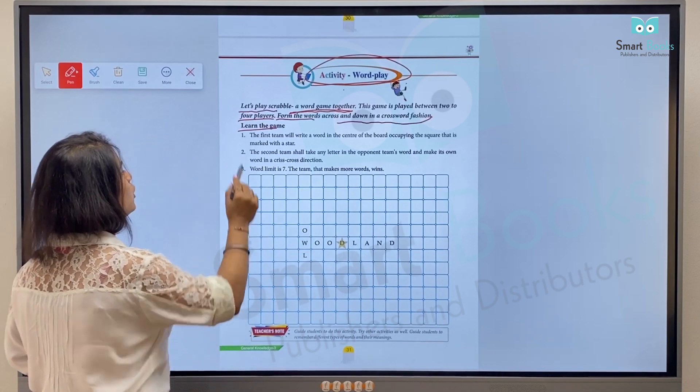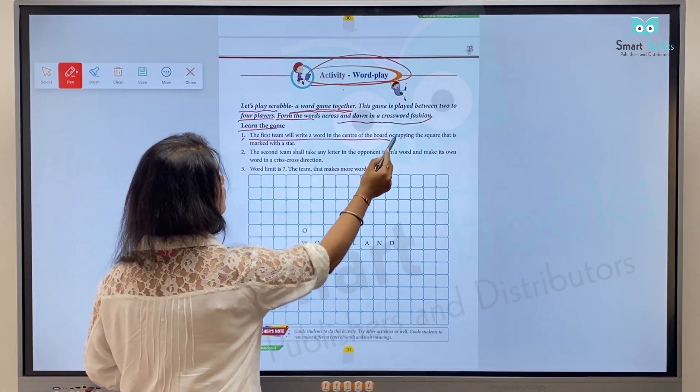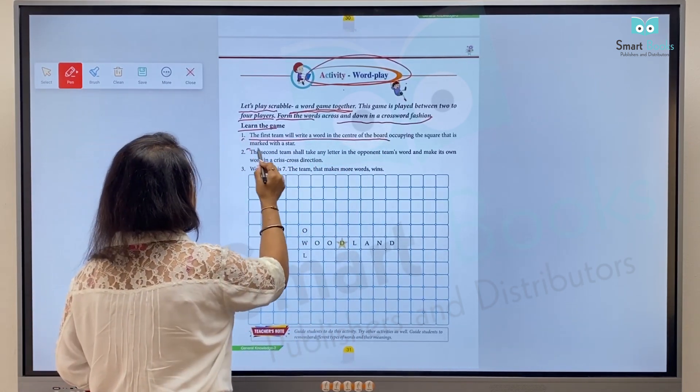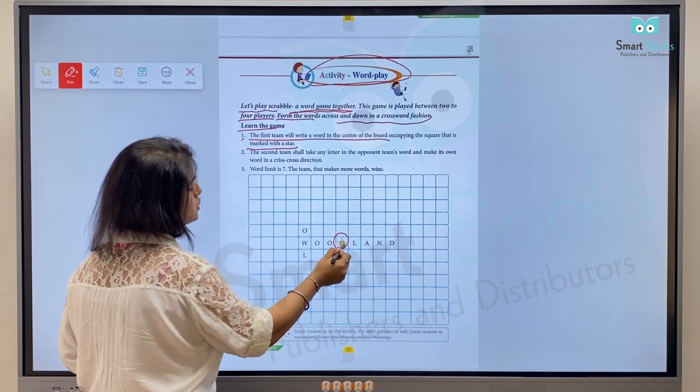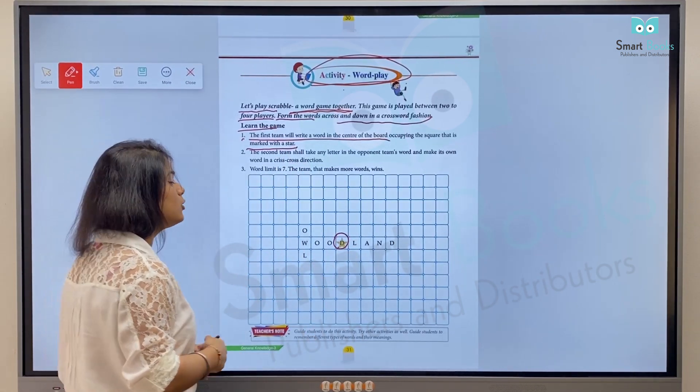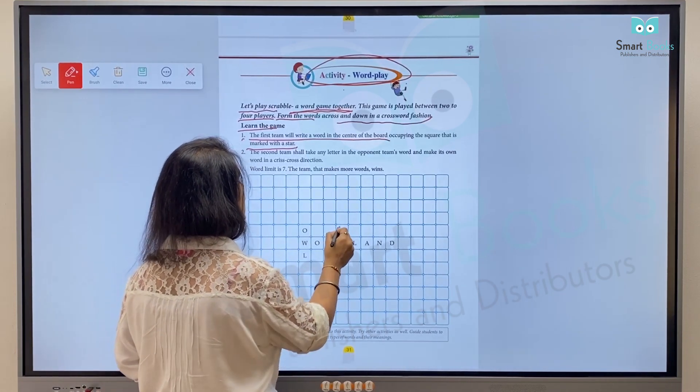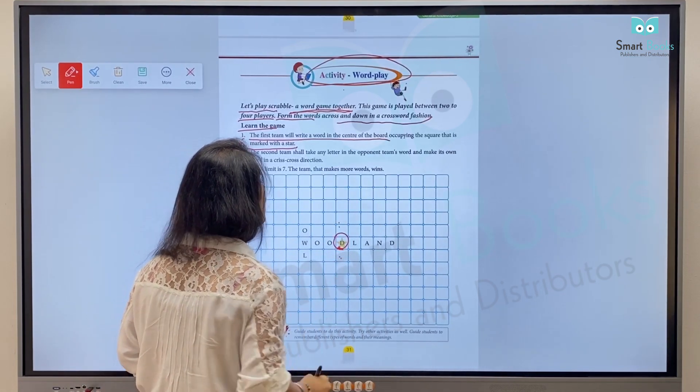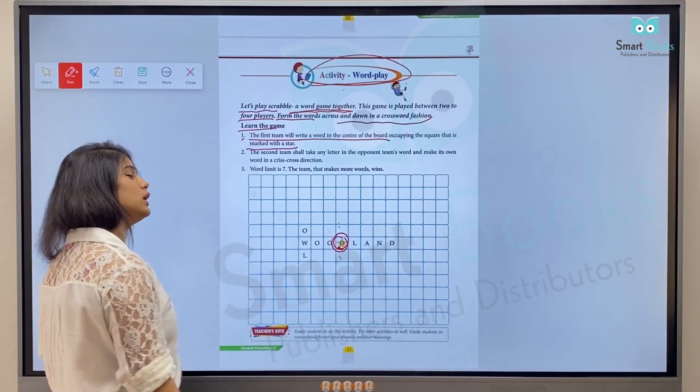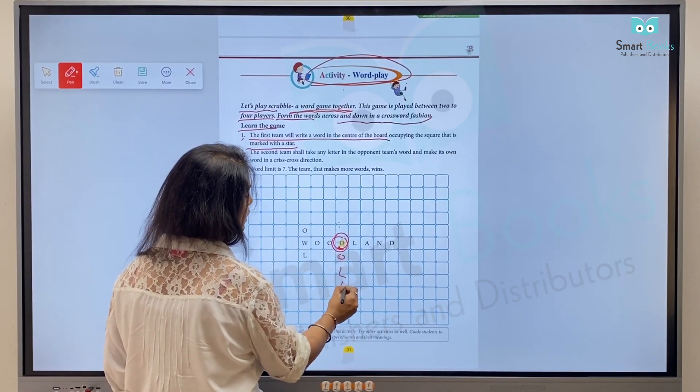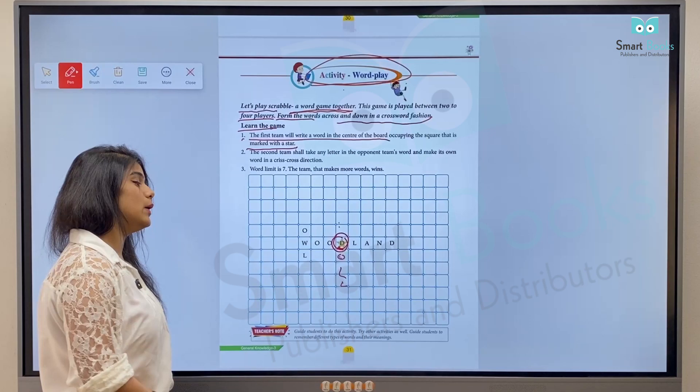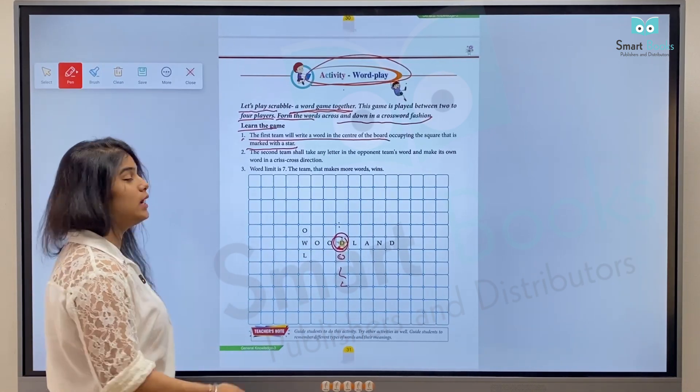One: The first team will write a word in the center of the board occupying the square that is marked with a star. The word is already there, so you have to make a word around it that includes this word, like 'doll' or something similar including these letters.